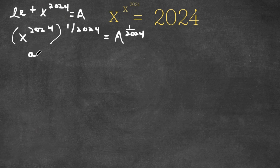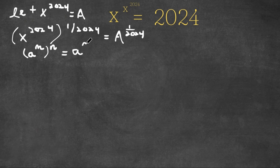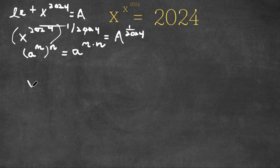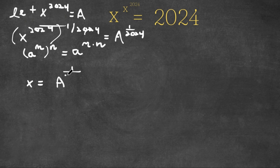Now if we have something in the form a to the power of m, to the power of n, this is equal to a to the power of m times n. So x to the power of 2024, to the power of 1 over 2024 — well, 2024 times 1 over 2024 simply cancel out and equal 1. So we have x to the power of 1, which is the same thing as x, is equal to a to the power of 1 over 2024.